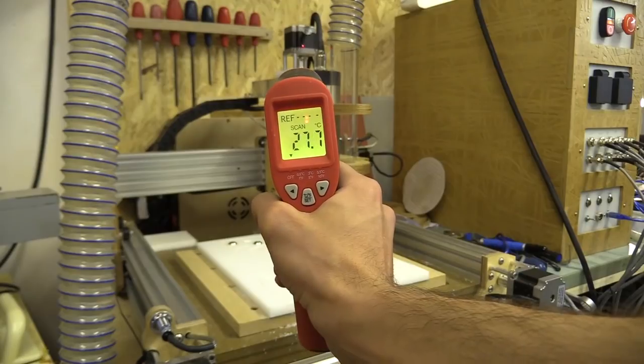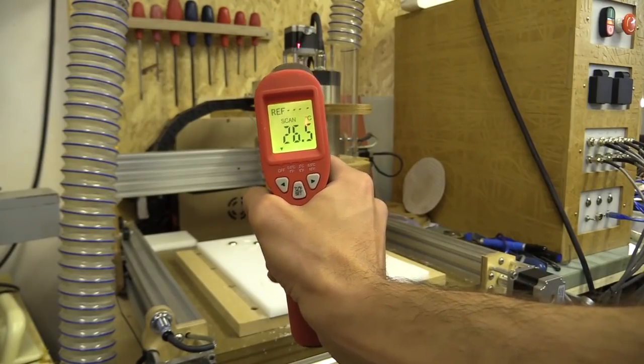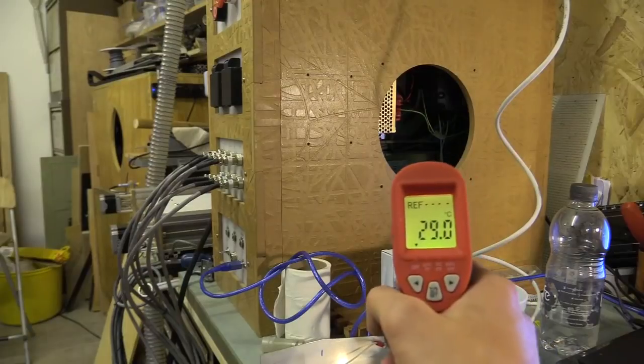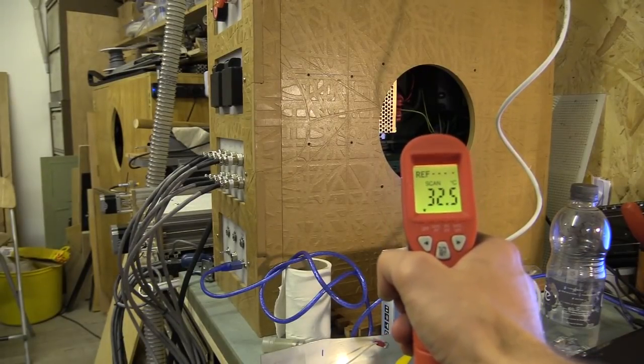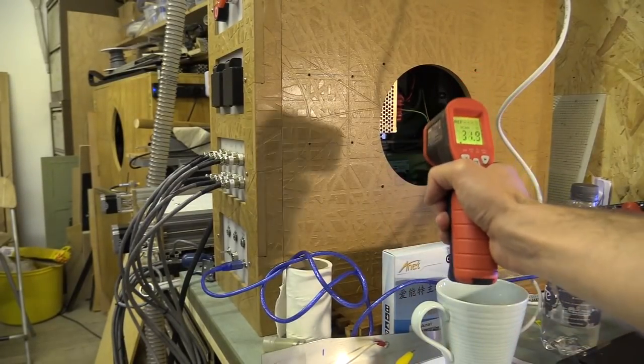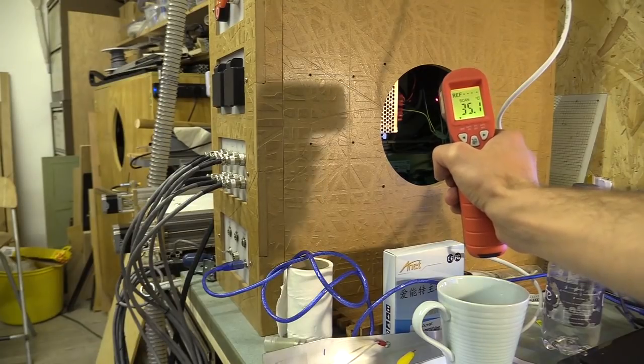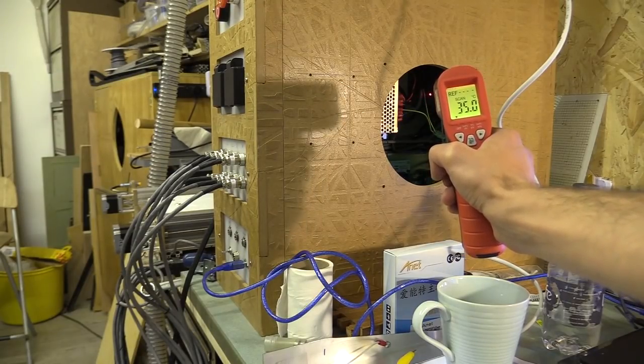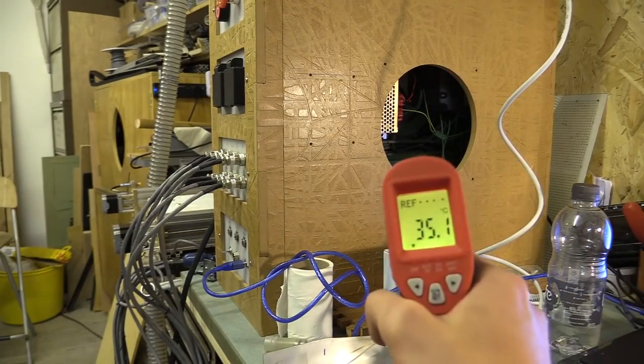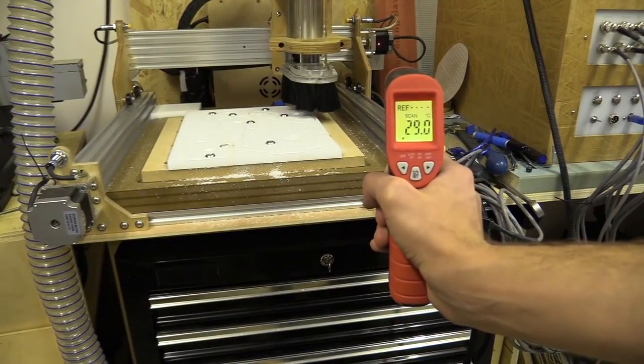Once this had completed I decided to check the temperature of the CNC machine by using this laser temperature measurer. I've been cutting on and off for a couple of hours now. It's over 30 degrees. The results are good on the machine but not too bad in the enclosure considering I haven't put any extra cooling fans inside yet.